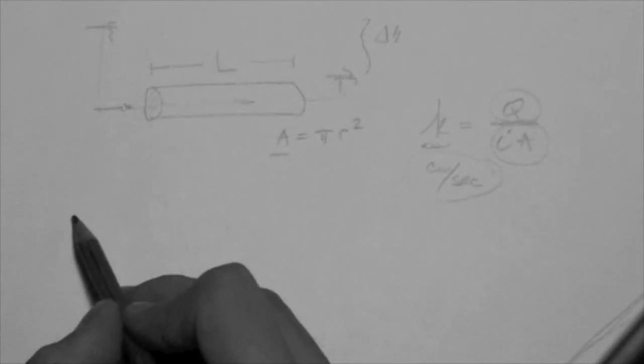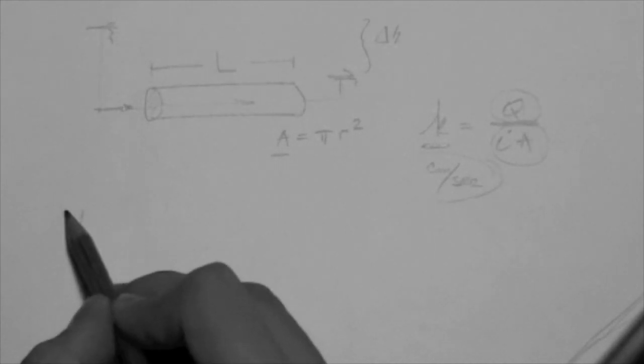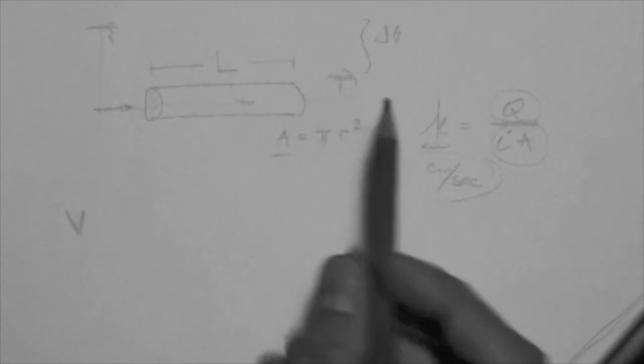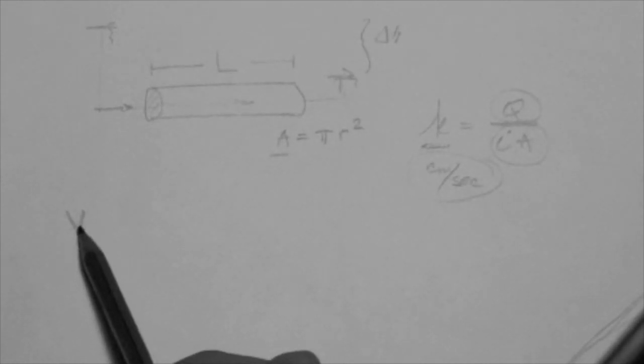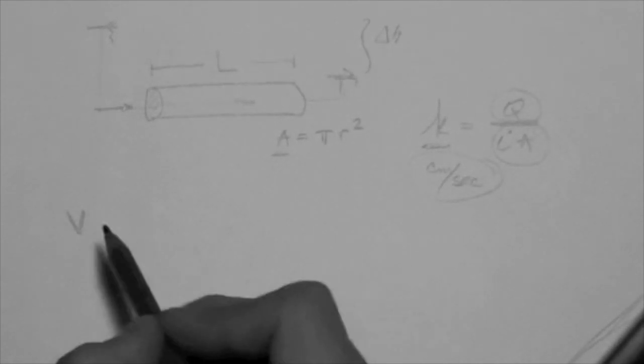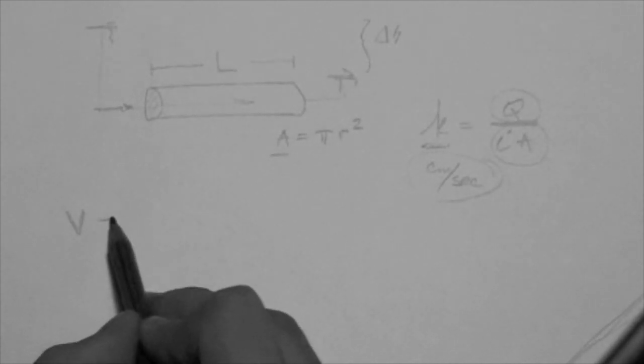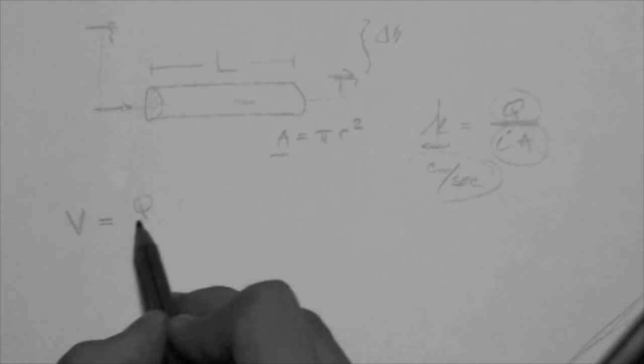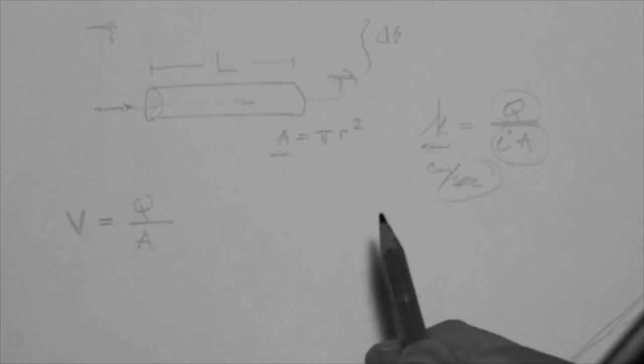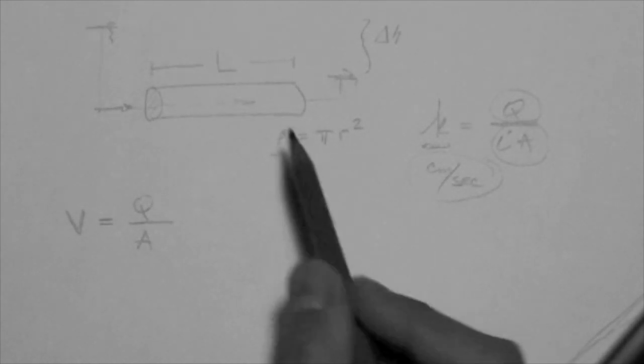Now, the velocity, the true velocity—I shouldn't say it's a true velocity, but the actual velocity calculation is done this way. You know that the velocity inside a tube is equal to Q divided by A.